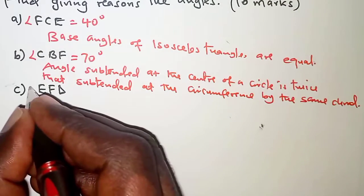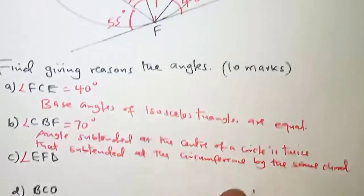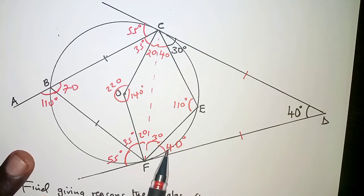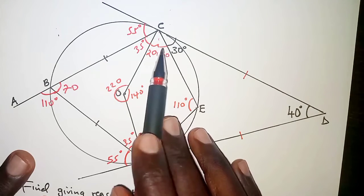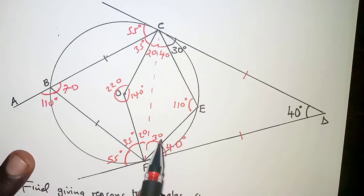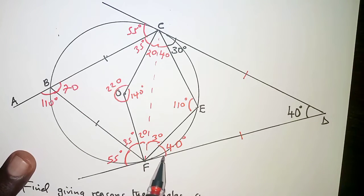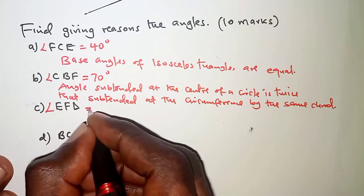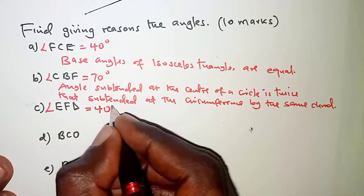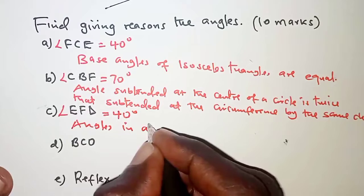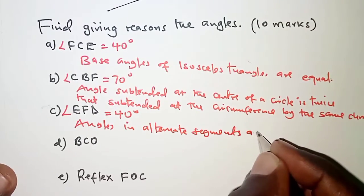Part C: angle EFD. Angle EFD is 40 degrees. We identify chord FE subtending 40 degrees at point C on the circumference, and by the alternate segment theorem the angle between the chord and the tangent FD equals the angle in the alternate segment. So angle EFD is 40 degrees, with reason: angles in alternate segments are equal.